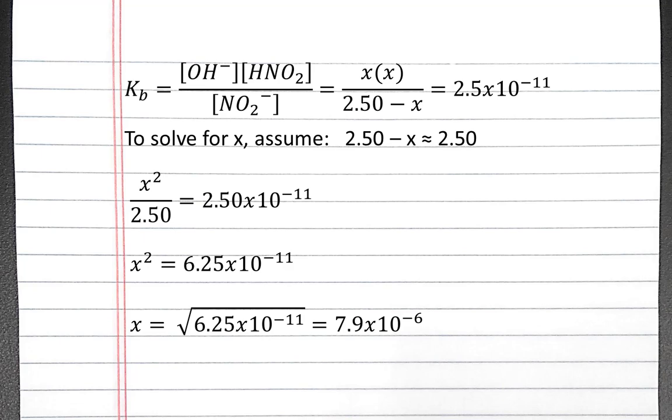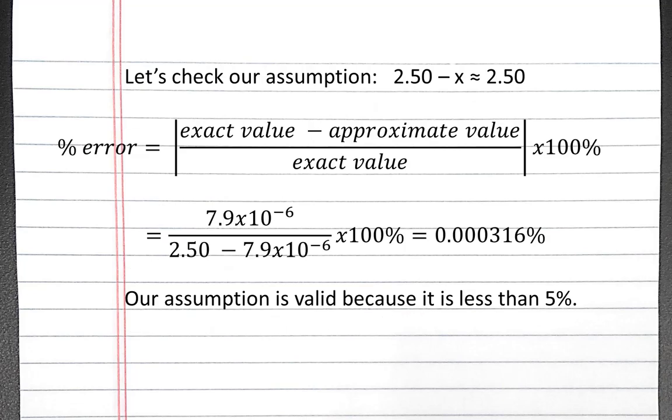We have to make sure that our assumption is valid. So to check our assumption, we can calculate the percent error, which will be our exact value, which is 2.5 minus X, minus our approximate value, which is 2.5, divided by our exact value, which is 2.5 minus X, times 100%. And that will be 0.000316%. So our assumption is valid because it's less than 5%.